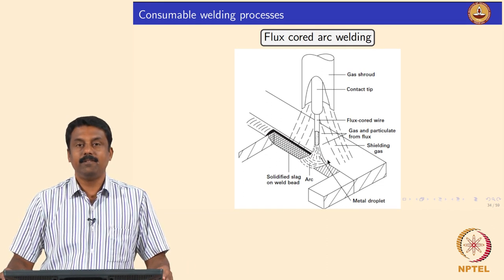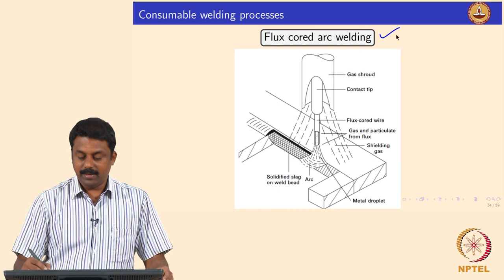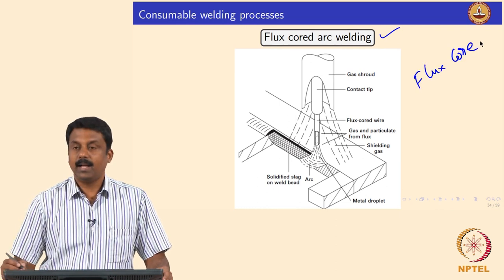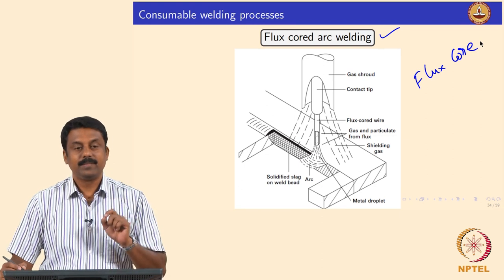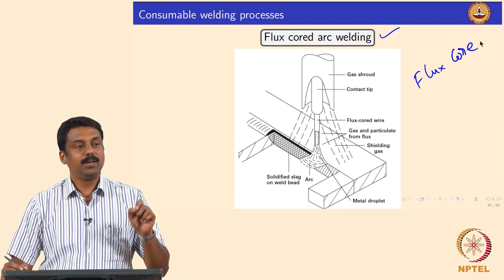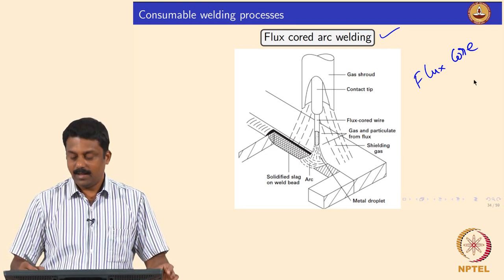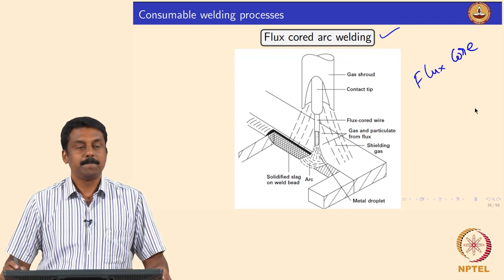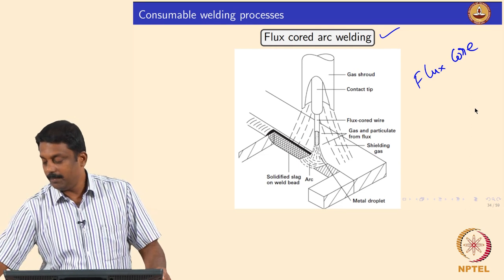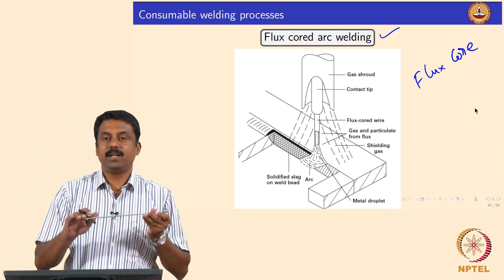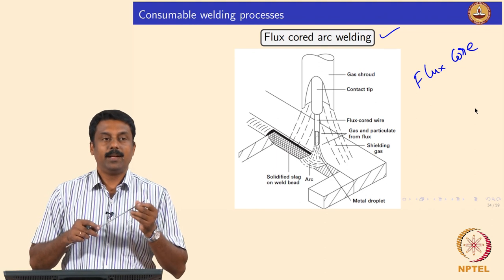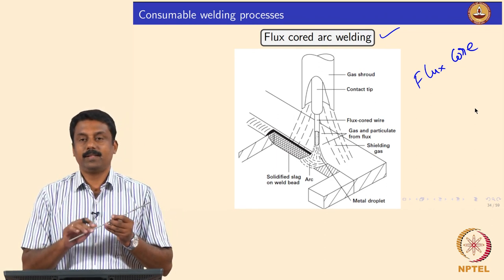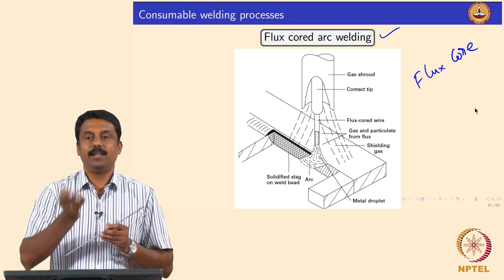That is mainly achieved by flux cored arc welding, where the electrode has a core and that core is flux, with an outside shield made of metal. In another configuration, you have a metal core and the flux is outside the metal wire. You can also make the wire electrode as a tube, fill the tube with flux, and the tube surface is metal.